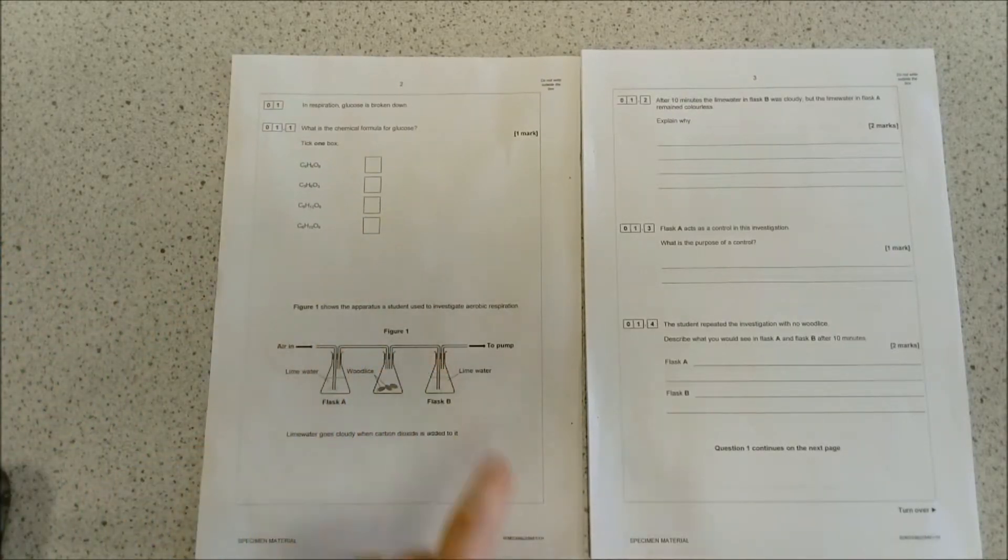Following that, we move on to figure one, which shows an apparatus used to investigate aerobic respiration. First thing that you need to be thinking about: aerobic respiration is normal respiration where we're taking in oxygen and breathing out carbon dioxide and water, and we're reacting it with glucose.